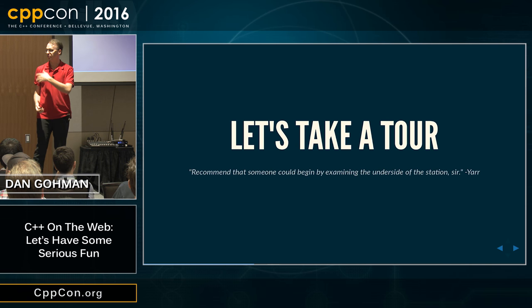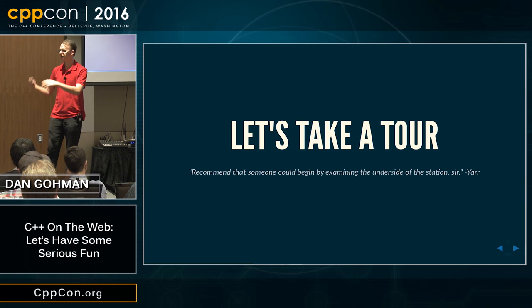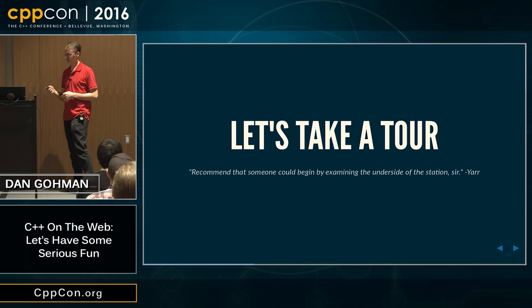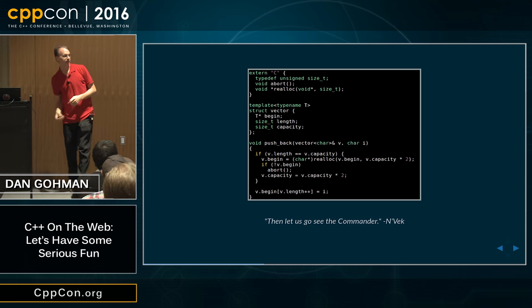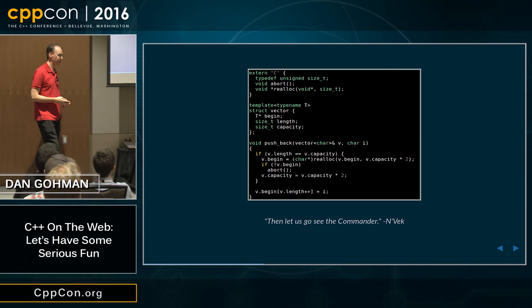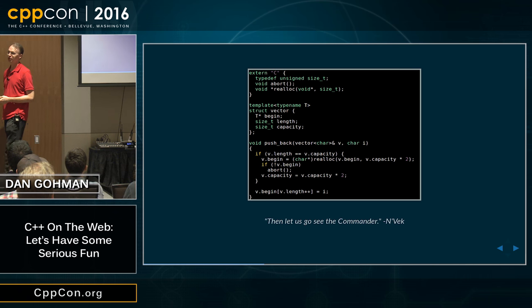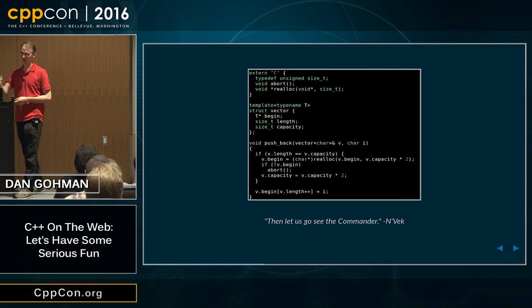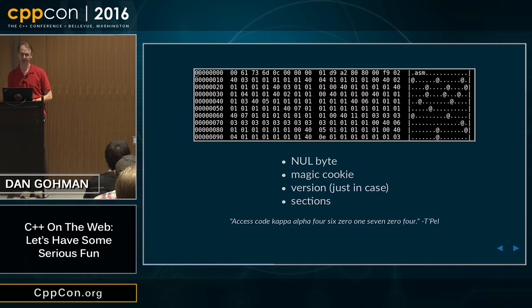Now I want to take a tour through WebAssembly — show you some of the insides and go end-to-end from C++ all the way down to native code. Here's my C++ code: if you've written your own std::vector before, this will be pretty familiar. Basically if we don't have capacity, we have to realloc; otherwise, we go ahead and append the element. So you compile it to WebAssembly and you get something that looks like this in a hex dump.